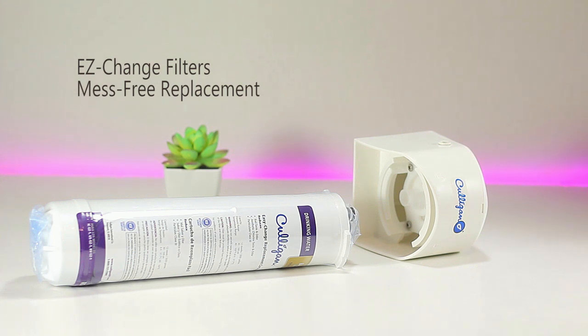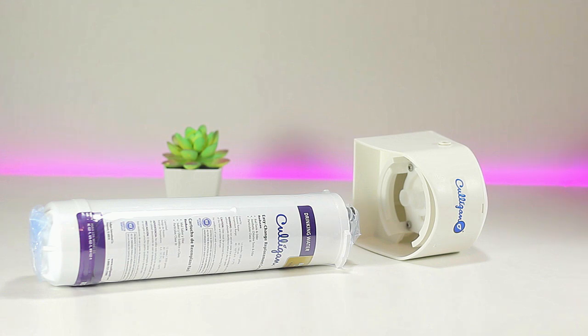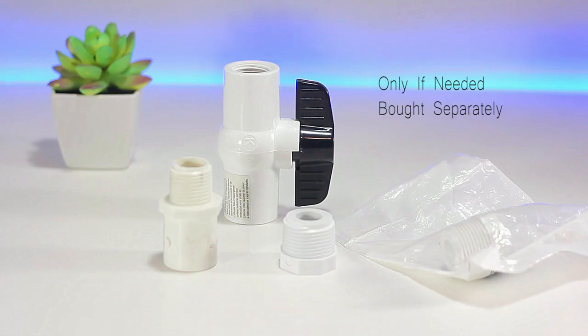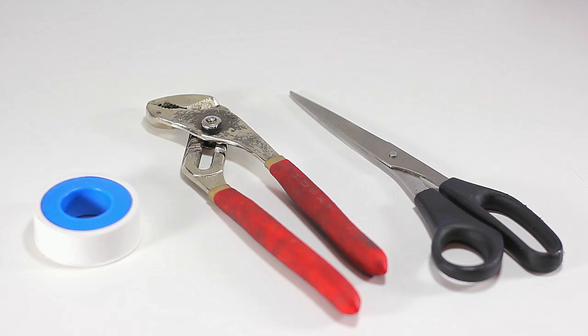The filter is mess-free, which means you can twist it to lock it in place and twist it off without having to shut off your water supply to replace or install. Depending on your water connection, you might need some adapters in case your tubing size is not half an inch, or you might want to install a shutoff valve. This is a very easy installation. The only things you might need are pliers, scissors, and plumber's tape.